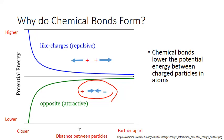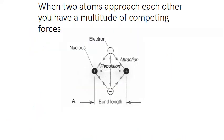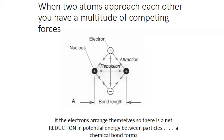These particles feel an attractive force towards each other, bringing them closer together. And that attractive force means that the potential energy of these two particles actually decreases the closer they are to each other. So when two atoms approach each other, you have a multitude of competing forces between charged protons and electrons. If the electrons arrange themselves so there is a net reduction in potential energy between the atoms, a chemical bond is formed.